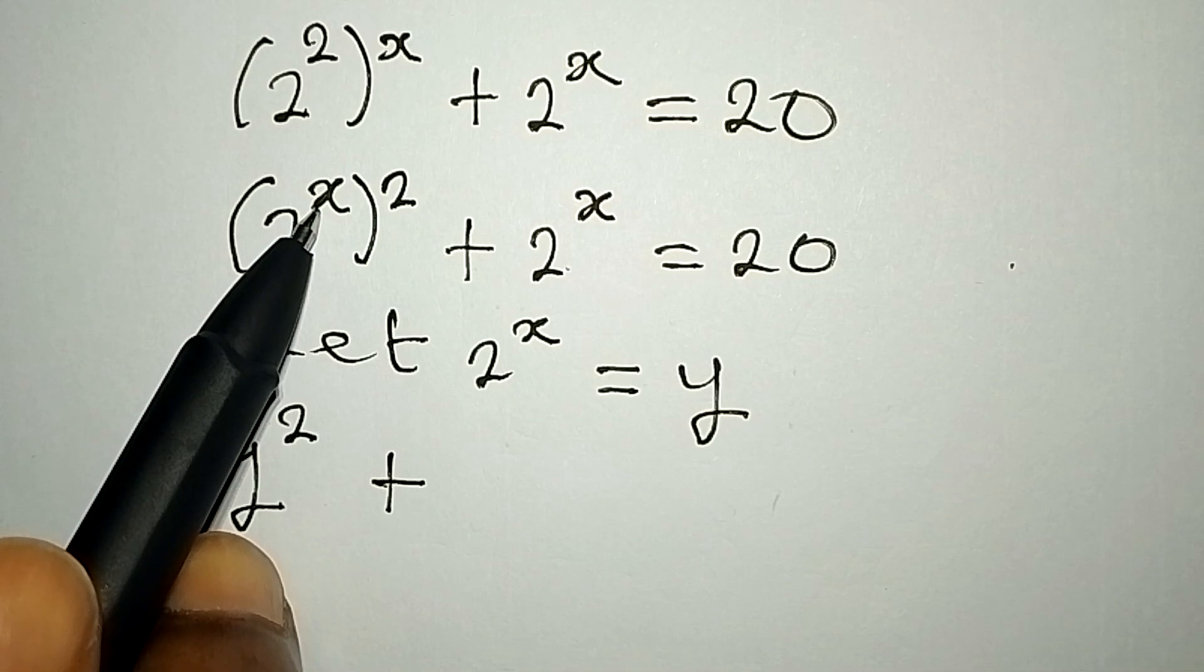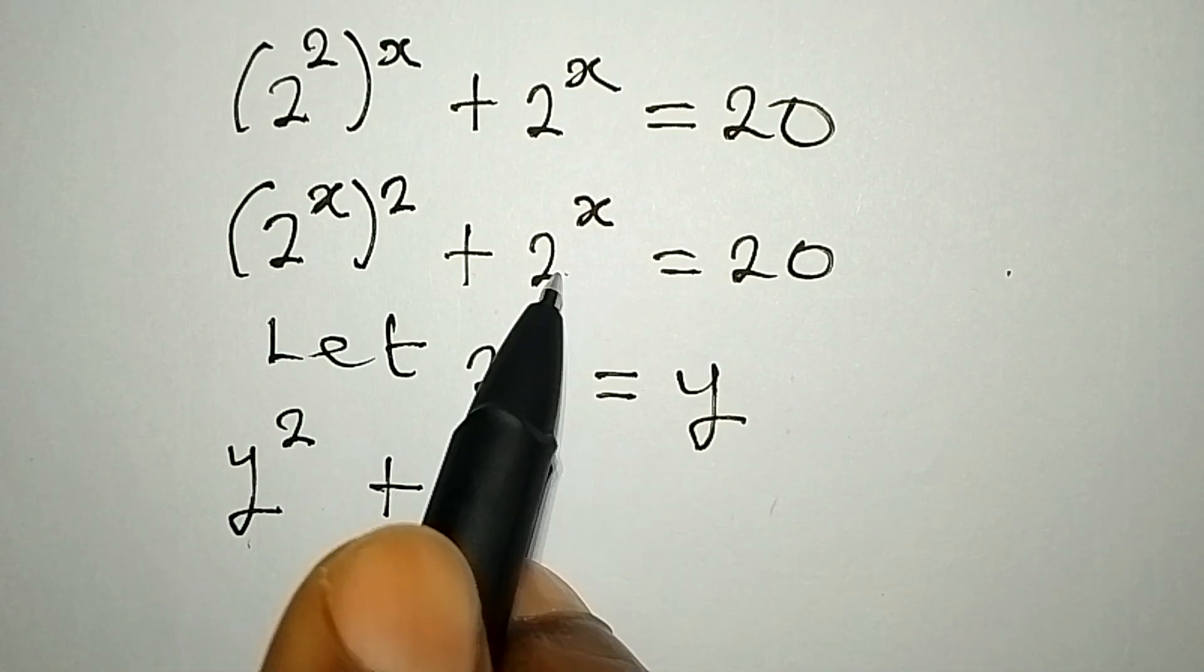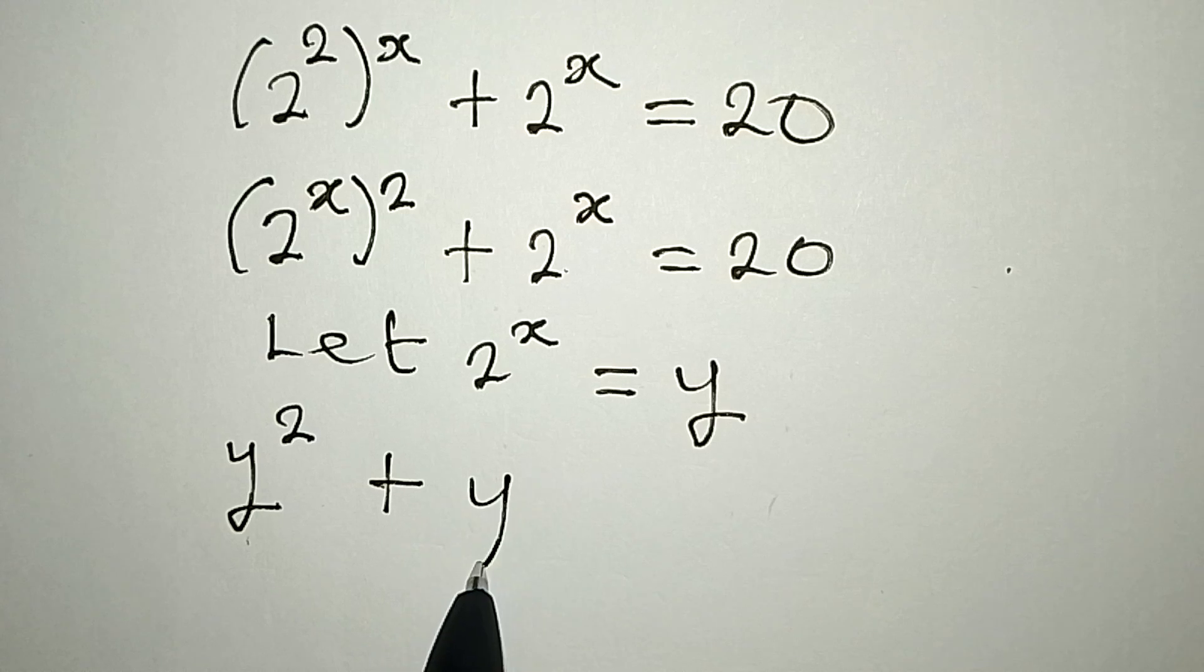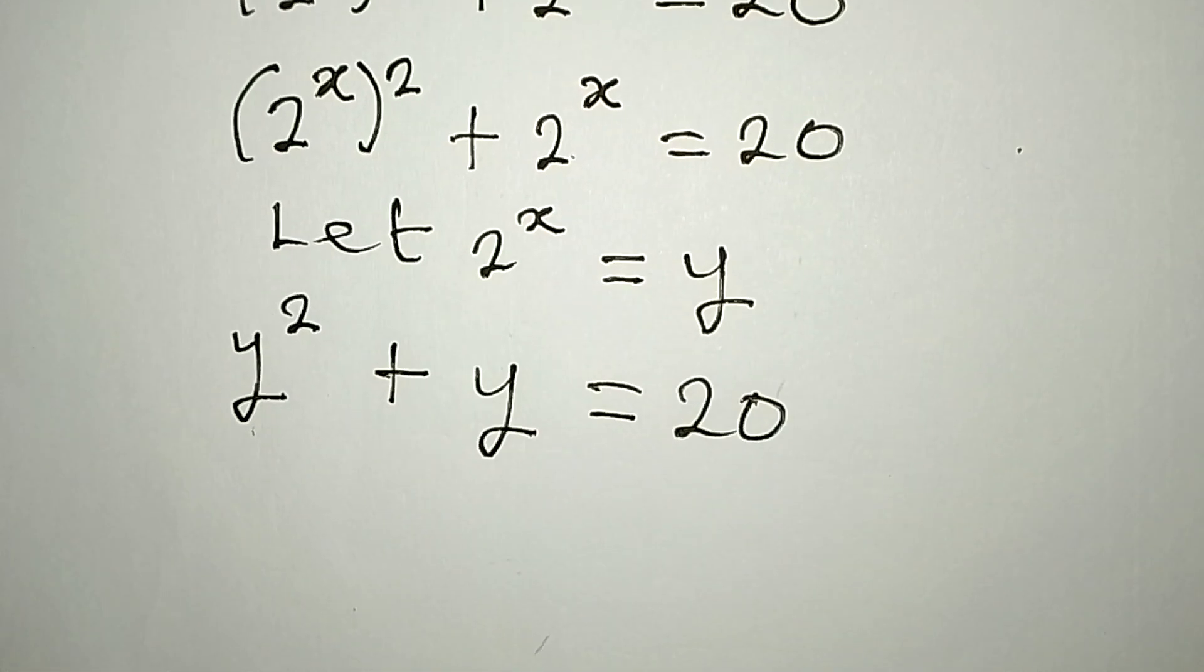Plus in place of 2 to the power of x we'll have y, then the square on it is there. Then 2 to the power of x is y, and this will be equal to 20. Here we have a quadratic equation.